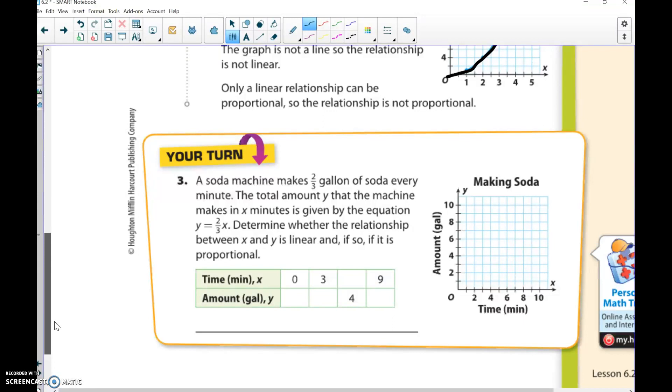We can see my equation is y = 2/3x, no x squared or anything like that, so it would be linear. Then we don't have a y-intercept, there's no plus or minus a number there, so we know it's proportional. This one would be linear and proportional.